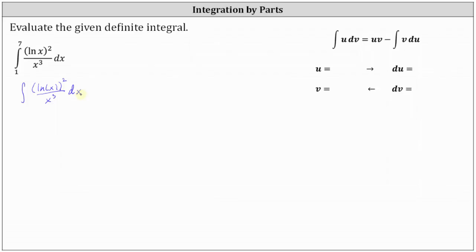Whenever performing integration by parts, if the integrand contains natural log x we normally let u equal natural log x, but here we have the square of natural log x, so we'll let u equal the square of natural log x. This indicates that dv is equal to one divided by x cubed dx, which we'll write as x to the power of negative 3 dx.